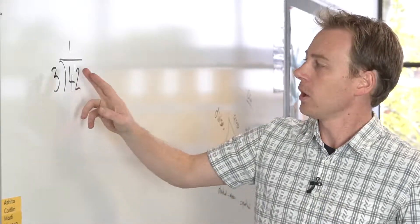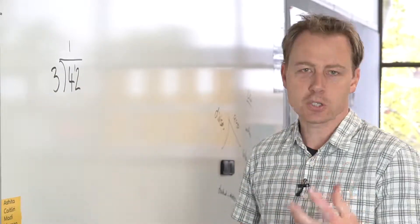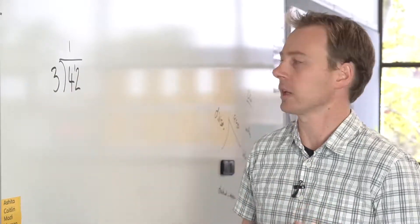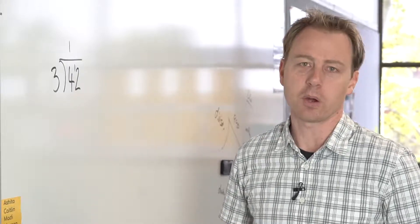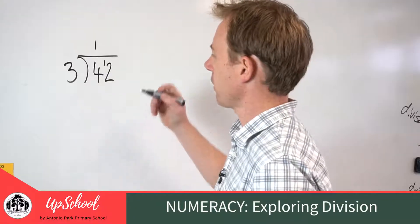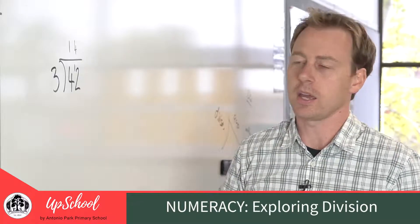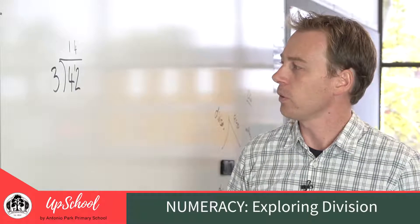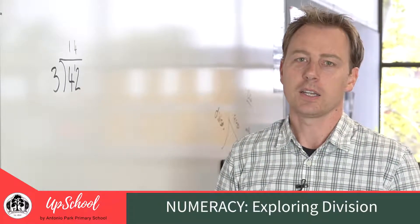So I've now got 12 divided by 3, and students who know their multiplication facts will quickly be able to say, well, 12 divided by 3—I know that 3 times 4 is 12—so 12 divided by 3 is 4, and there's no remainder there. So the answer will stay at 14. 42 divided by 3 is 14.